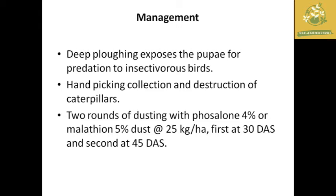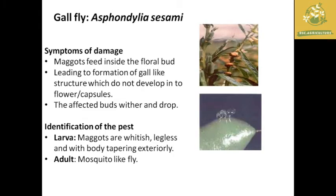Management for hawk moth includes deep plowing to expose pupae and allow predation by insectivorous birds. Hand picking and destruction of caterpillars is an effective method. Chemical management includes dusting with Carbaryl 4% or Malathion 5% dust at 25 kg per hectare at 30 and 45 days after sowing.